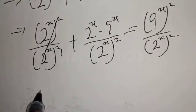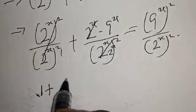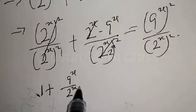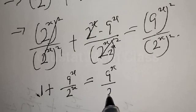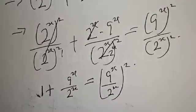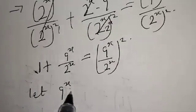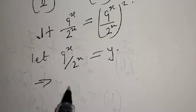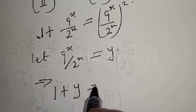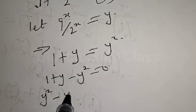This can be written as 1 plus — since 2 raised to power x cancels one factor — we have 9 raised to power x over 2 raised to power x, equal to 9 raised to power x over 2 raised to power x, all squared. Let y equal to 9 raised to power x over 2 raised to power x. This implies we have 1 plus y equals y squared, which gives us y squared minus y minus 1 equals 0.